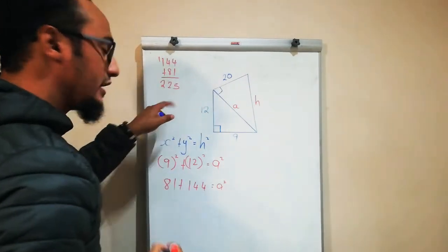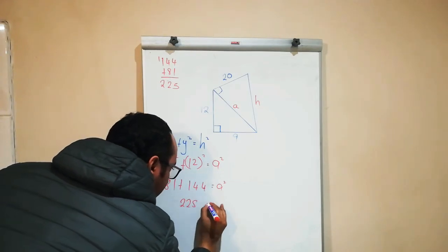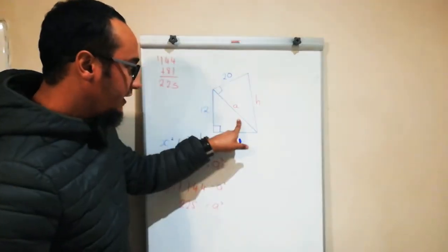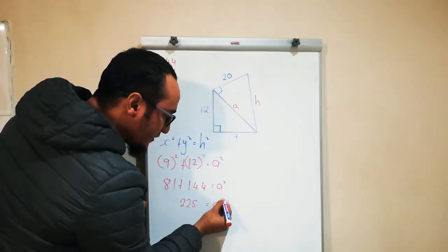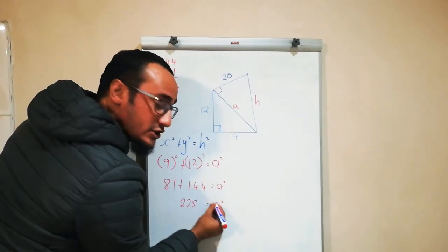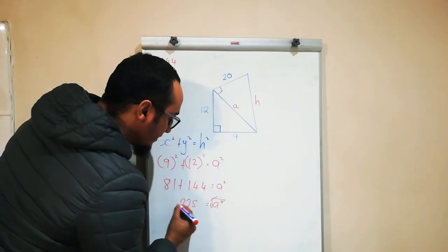Am I calculating a or a squared? I'm calculating a, meaning I need to get rid of the square. By getting rid of that, I use the inverse operation of a square, and that is the square root. What I do on my right hand side, I need to do on my left hand side.